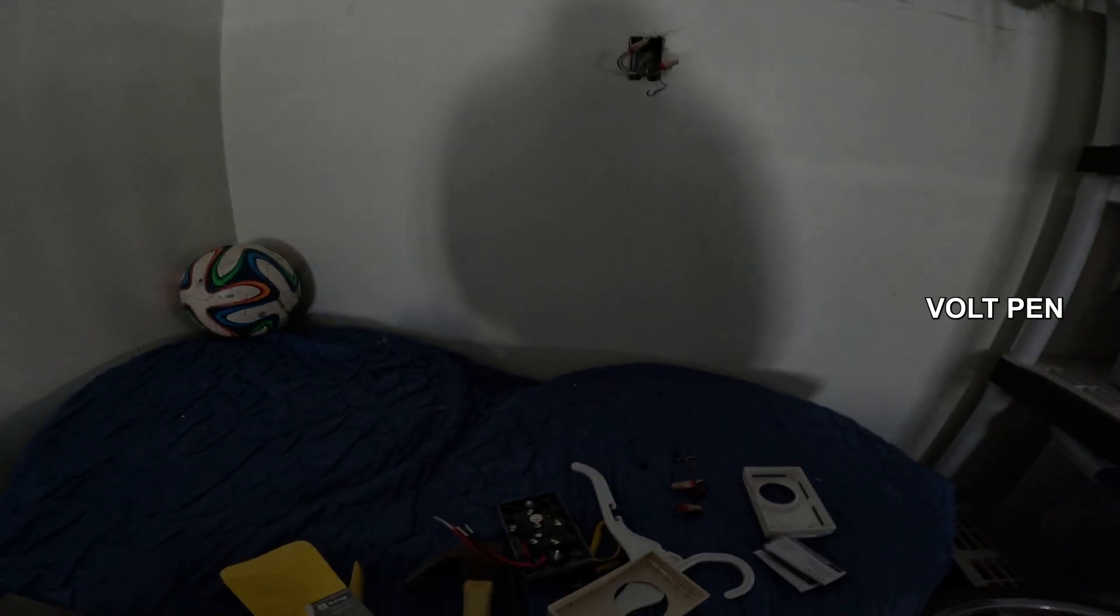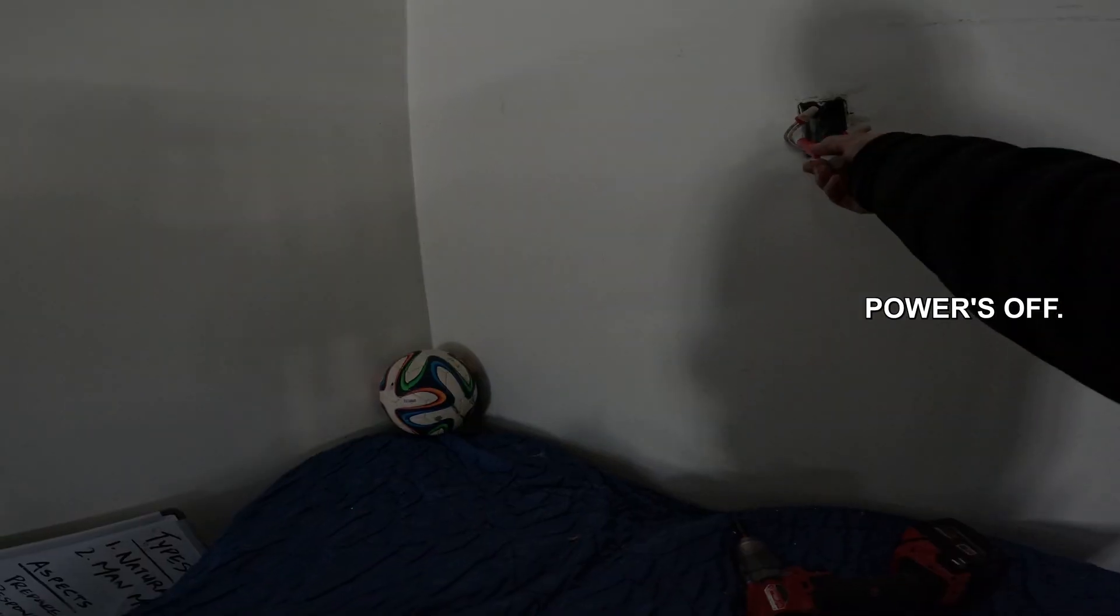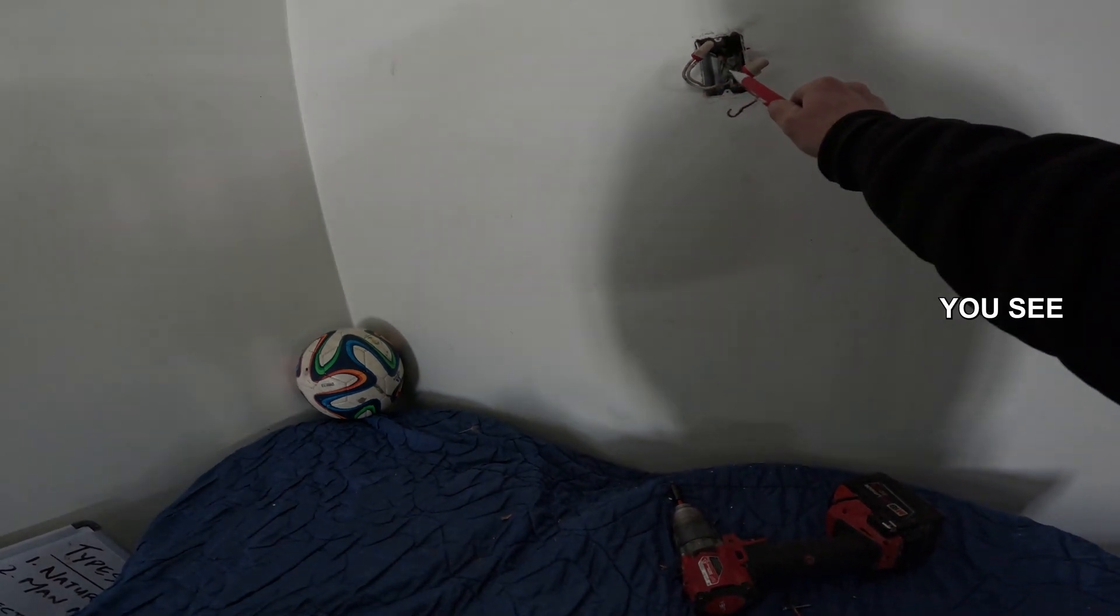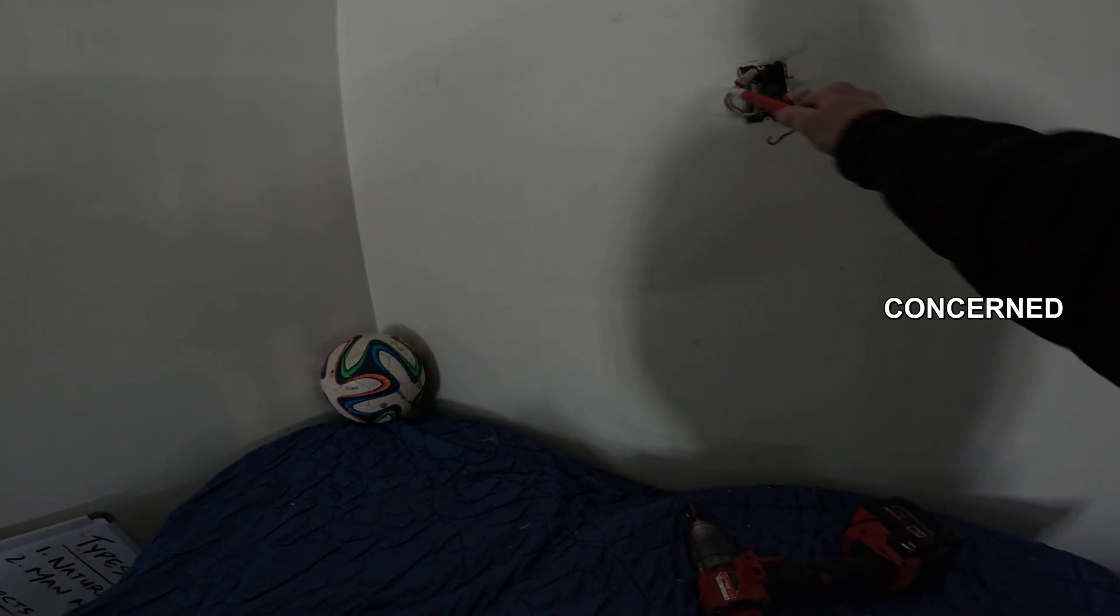I'm going to take my volt pen and just verify power's off. You'll see that it lights up but it doesn't stay on. When I touch it and you see a little red flicker, that's nothing to be concerned about. This tells me there's no power on there.